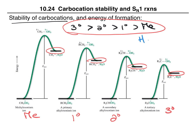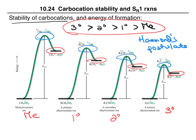We also have to take into consideration Hammond's postulate, which tells us that because this transition state is closer in energy to the product than the starting material, we know that the structure of the transition state must be similar to the structure of the carbocation. Hammond's postulate gives us the relative energy of the transition states: because the tertiary carbocation is the most stable, the transition state leading to it will be lower energy than the transition state leading to a secondary carbocation. The transition state leading to a primary carbocation will be higher in energy, and the transition state leading to a methyl carbocation will be the highest in energy.